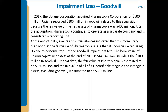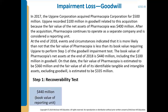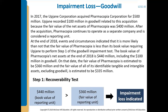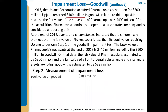On that date, the fair value of Pharmacopia is estimated to be $360 million, and the fair value of its identified tangible and intangible assets excluding goodwill is estimated to be $335 million. We can definitely see there was an impairment — the fair value is much less than the book value of $440 million. We do our step one test: the $440 million book value is higher than the fair value of the reporting unit of $360 million, so it's clear there is an impairment loss.